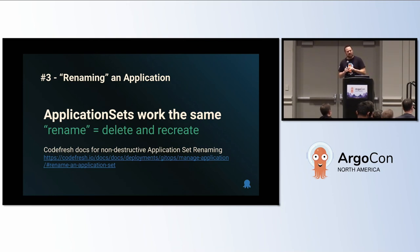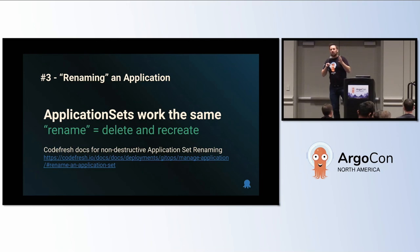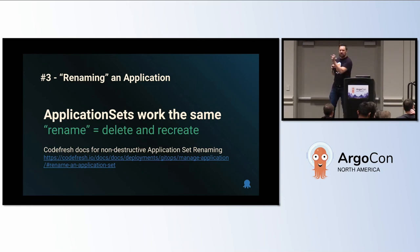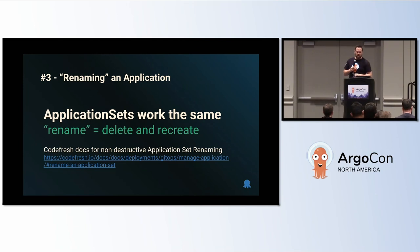Application sets work the same way — renaming an application set will also delete it. Except, remember, application sets by default set finalizers. So if you delete an application set, you will automatically delete all of its child applications and all of their resources, because the applications are owned by owner reference and finalizers are set on all resources under the application by default.